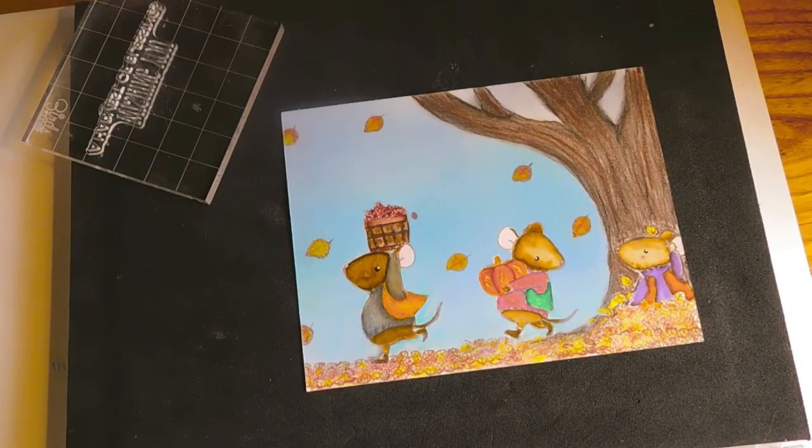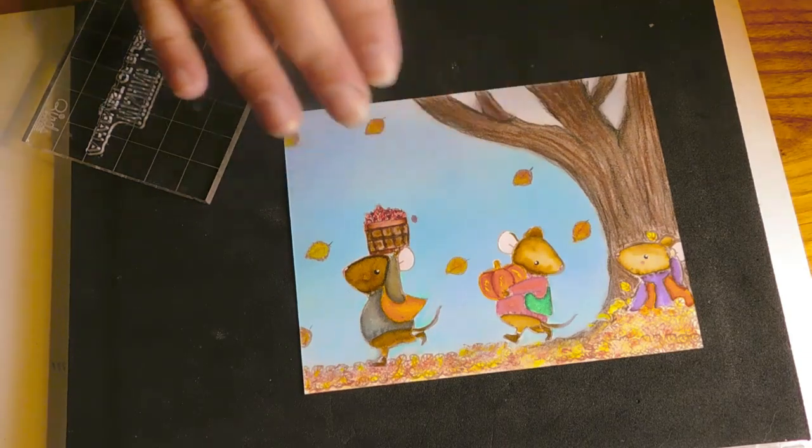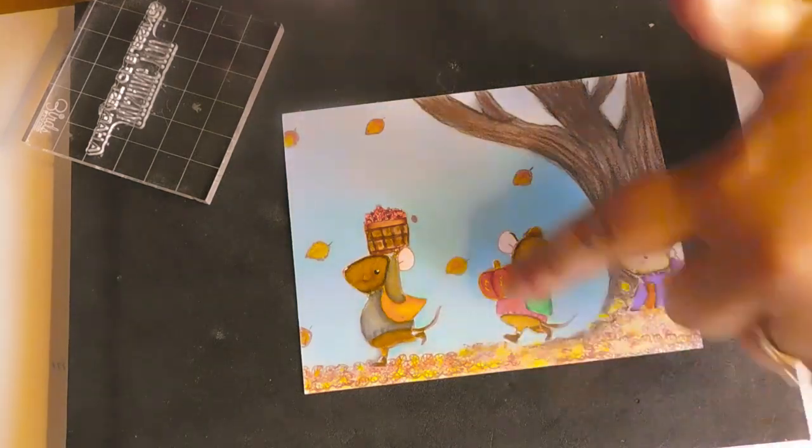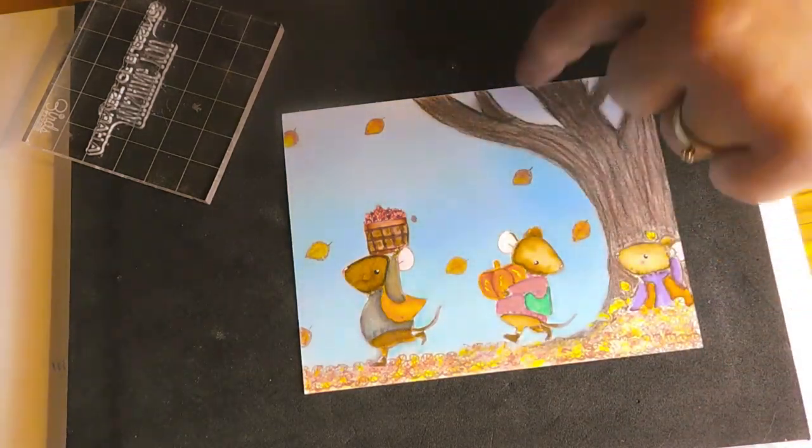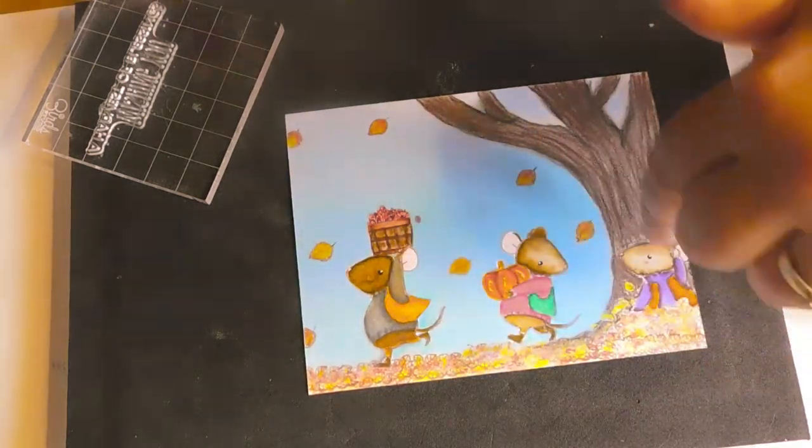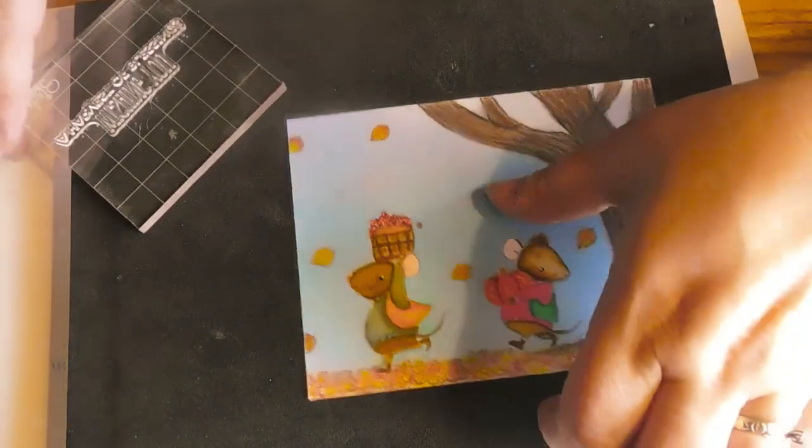Okay guys, so we've finished the coloring. And again, I've just used the pastel pencils, pastel chalk pencils on the leaves and the tree. And we have our little mouse family here and I just have the sentiment to stamp yet.